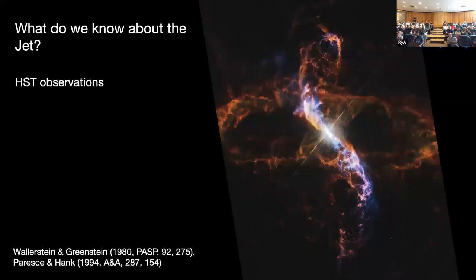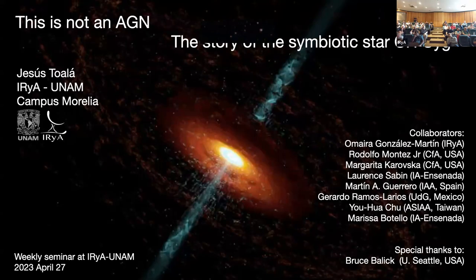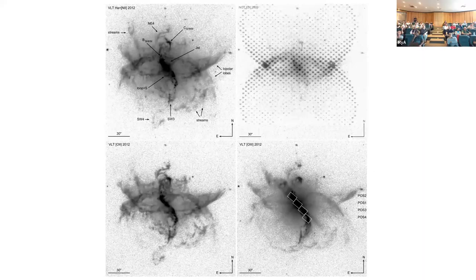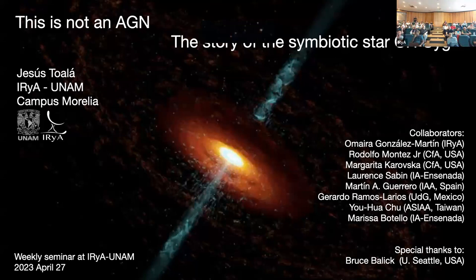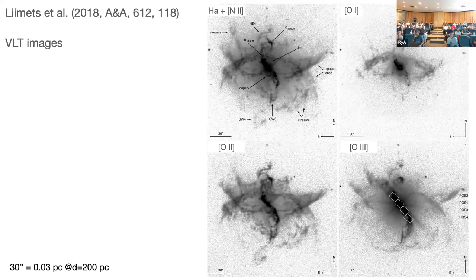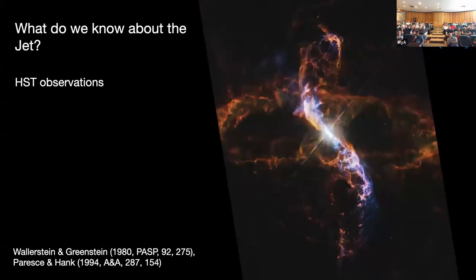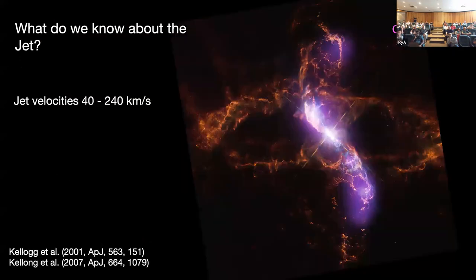What do we know about the jet? We know it's a jet because there have been lots of spectroscopic observations showing extremely high velocity structures. This is an HST image combining N II on top and O III. You can see amazing details. The scale is about 4.3 arcseconds, roughly 0.06 parsecs. When you overlay the Chandra images, the X-ray emission is exactly tracing this jet.